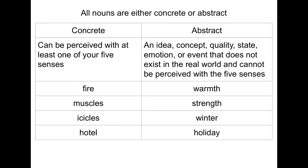You could probably say that you feel warmth, so that might be a little confusing. The ones on the left you could actually touch, whereas on the right it's more of a concept — it doesn't exist physically. These are the ones that people sometimes forget when they're identifying nouns.